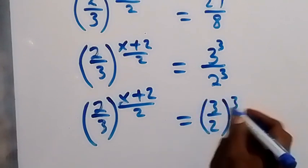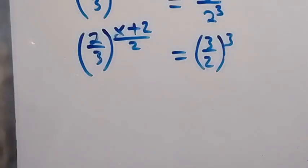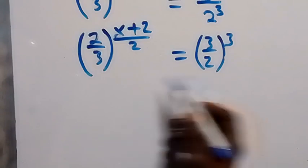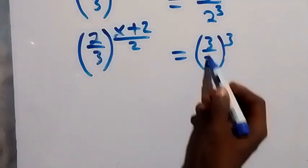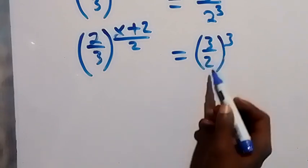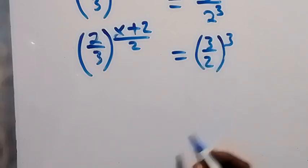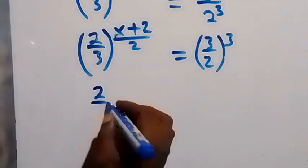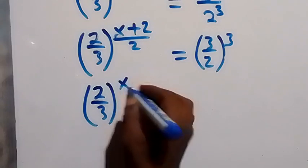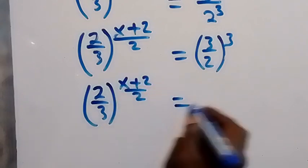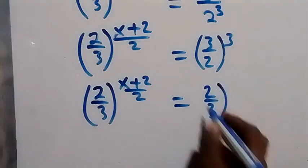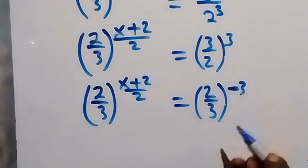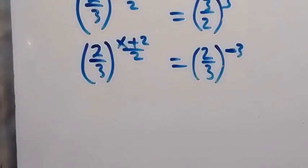To make the bases the same, we take the reciprocal of 3 over 2, which gives us 2 over 3. When we take the reciprocal, we apply a negative exponent by the law of indices. So this becomes 2 over 3 raised to power (x plus 2) over 2 equals 2 over 3 raised to power minus 3. The negative sign represents the reciprocal operation.